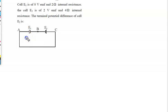Cell E1 is of 8 volt EMF and 2 ohm internal resistance. Cell E2 is of 2 volt EMF and 4 ohm internal resistance. The terminal potential difference of cell E2 means we have to calculate the voltage across B and C. So first of all we will calculate the net current flowing in the circuit.